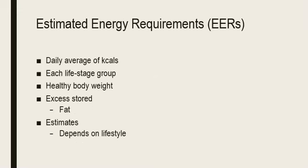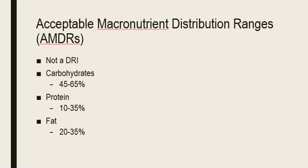The Estimated Energy Requirements, also known as EERs, are the average daily energy need for each life stage group — essentially the calories needed daily. Energy consumed above this amount is stored as body fat. Each person is different and these are only estimates. One's true energy requirement is based on their lifestyle and how active they are. The Food and Nutrition Board also created the Acceptable Macronutrient Distribution Ranges, known as the AMDRs. This is not a part of the DRIs.